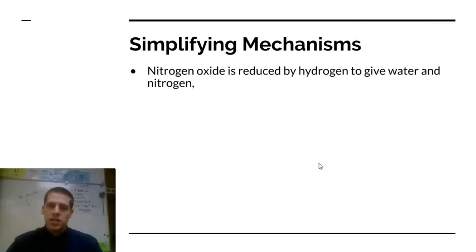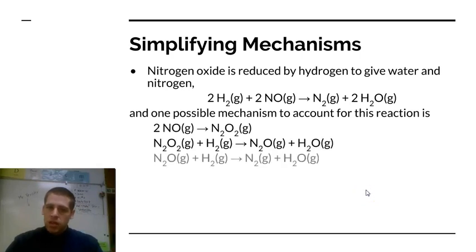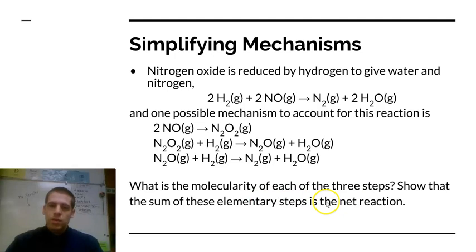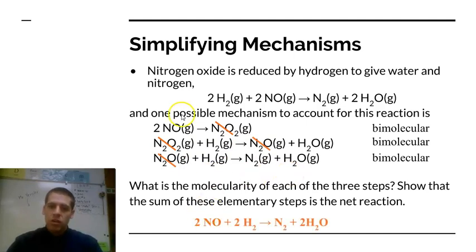We need to be able to simplify mechanisms. If a possible mechanism are these three steps, then what's the molecularity of each step? And we need to be able to demonstrate that this mechanism is actually a valid mechanism and sums up to our total overall reaction. If we look through each of these steps, this first one is going to be bimolecular because there's two NOs colliding. The second one is also bimolecular even though they're different elements or different molecules, and the third one is also bimolecular. So they're all bimolecular. Now, look for intermediates. In our first step, we're producing N2O2 and then we're using it up in the next step, so those cancel out. Same thing with N2O. We produce it here and then we use it up here, so those cancel out. Taking all of our reactants and all of our products, we end up with the same reaction that we had up here. So we know that this is a possible mechanism for this reaction.